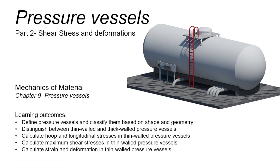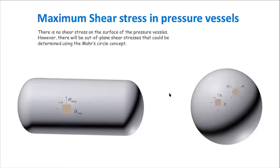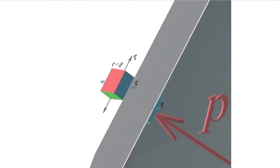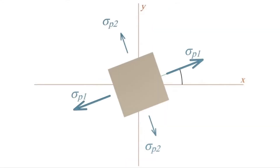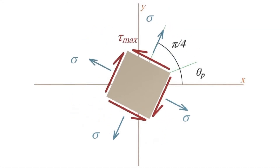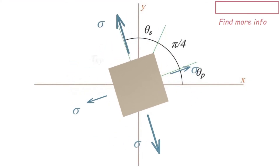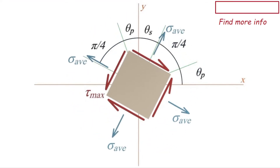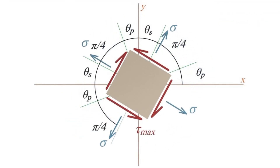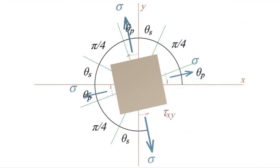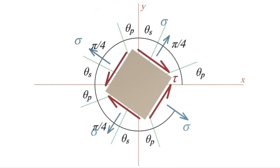Alright, let's extend our stress analysis concept and determine how much would be the maximum shear stress on the pressure vessels. Remember that by doing the free body diagram and calculating stresses, we did not observe any shear stress. However, we remember that sometimes there will be stresses developed out of the plane or by rotating the stress element. So here we want to study how much would be the maximum shear stress that is developed on the pressure vessels.